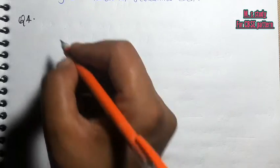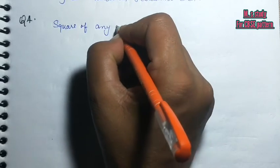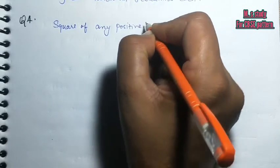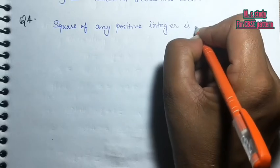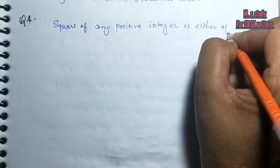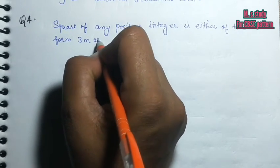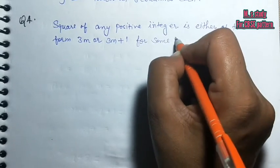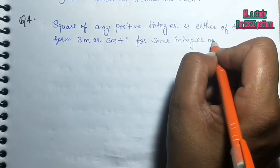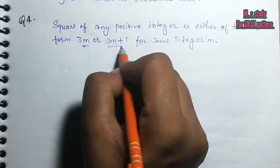Question number 4. Use Euclid's division lemma to show that the square of any positive integer is either of the form 3m or 3m plus 1 for some integer m. If there is no number, it will be this form or this form.